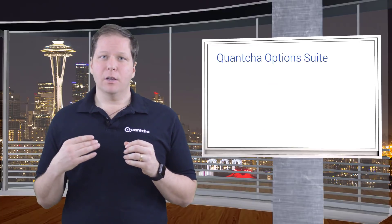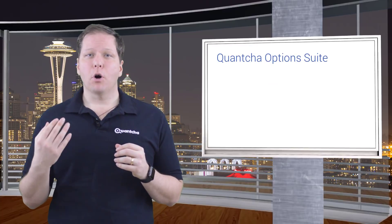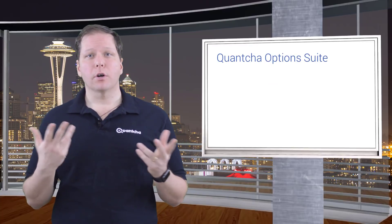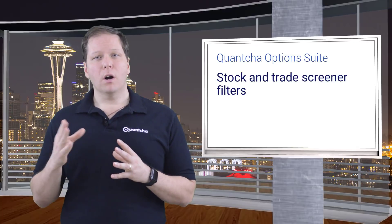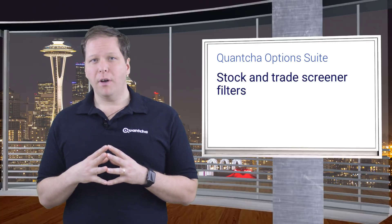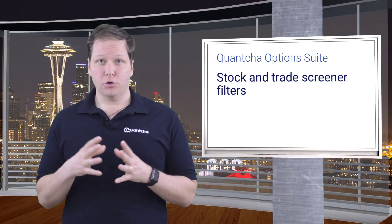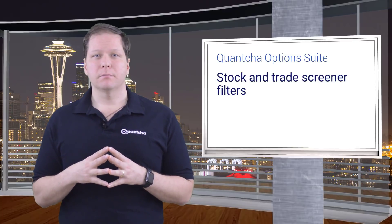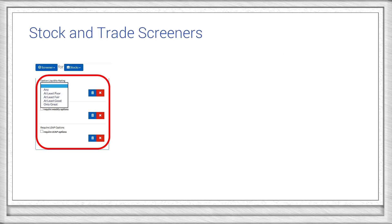We've invested a lot in making liquidity an integral part of our tools over at Quantra.com. One of the key places you'll find our liquidity data is on our stock and trade screeners. You can easily filter down to include only stocks that meet certain liquidity criteria, or filter to require stocks that have weekly options, such as if you're playing earnings.